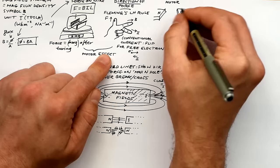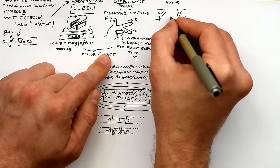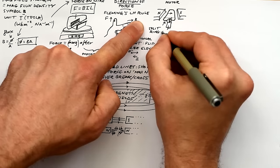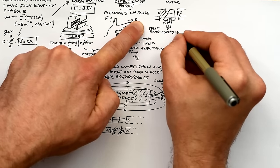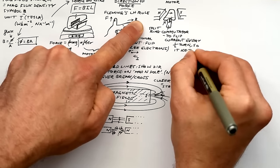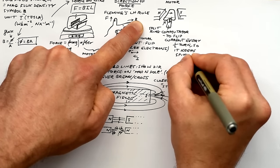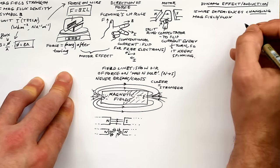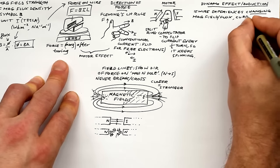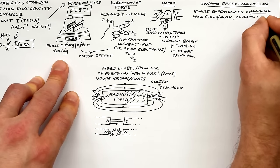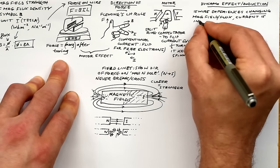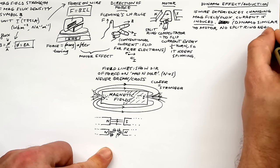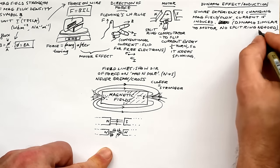F equals BIL and the force on wires is called the motor effect, used in a motor. We have a magnetic field from two magnets and a coil of wire — usually thousands of turns — attached to the power supply via a split-ring commutator, which makes the current flip every half turn. Without this, the coil would reach the vertical position and stop. The opposite is the dynamo effect: when a wire experiences a changing magnetic field or change in flux, currents are induced.